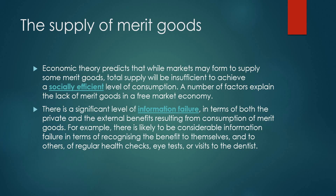Regarding the supply of merit goods, economic theory predicts that while markets may form to supply some merit goods, total supply will be insufficient to achieve a socially efficient level of consumption. A number of factors explain the lack of merit goods in a free market. There is a significant level of information failure in terms of both the private and external benefit from consuming merit goods — for example, recognizing the benefit of regular health checks, eye tests, or visits to the dentist.